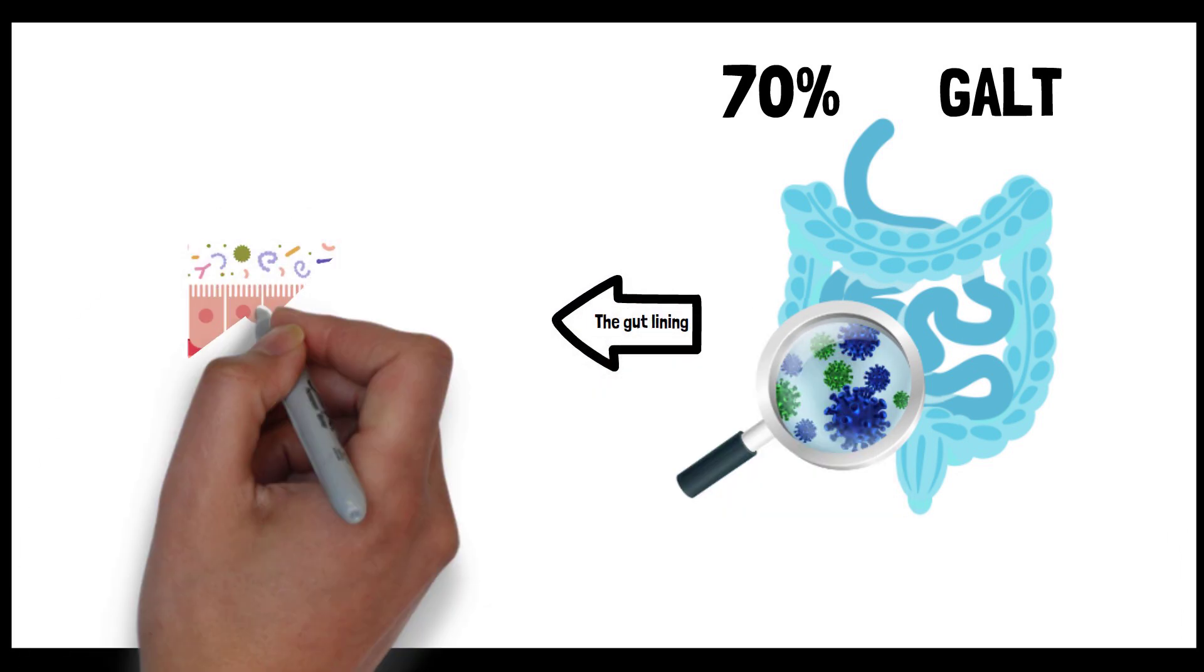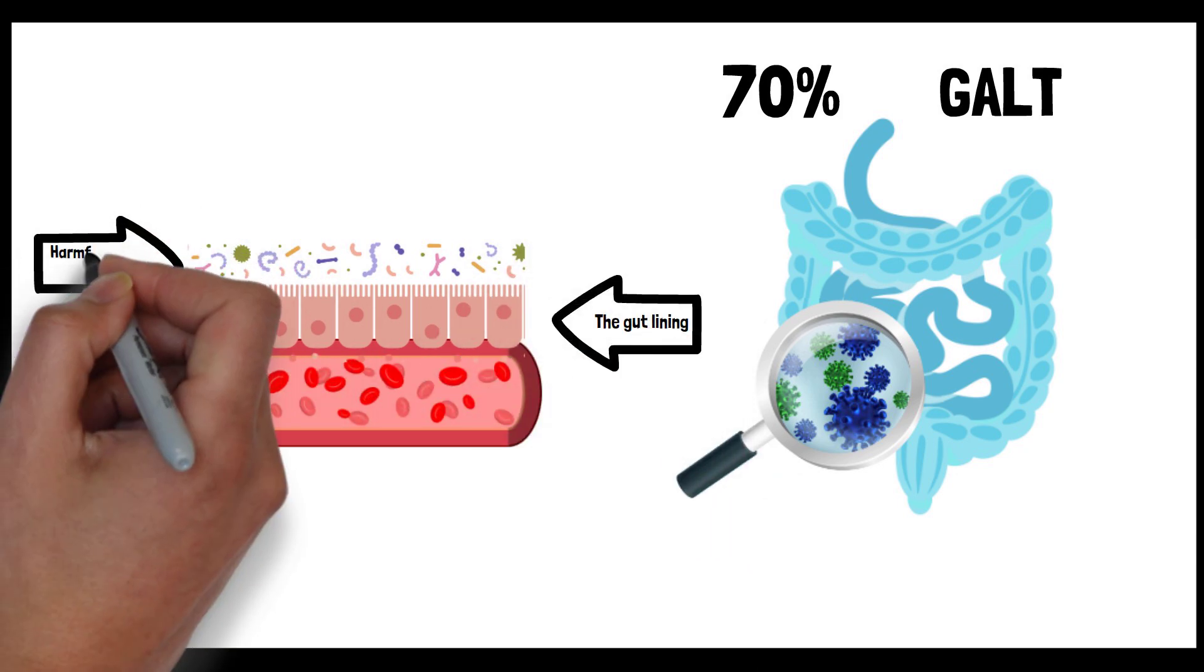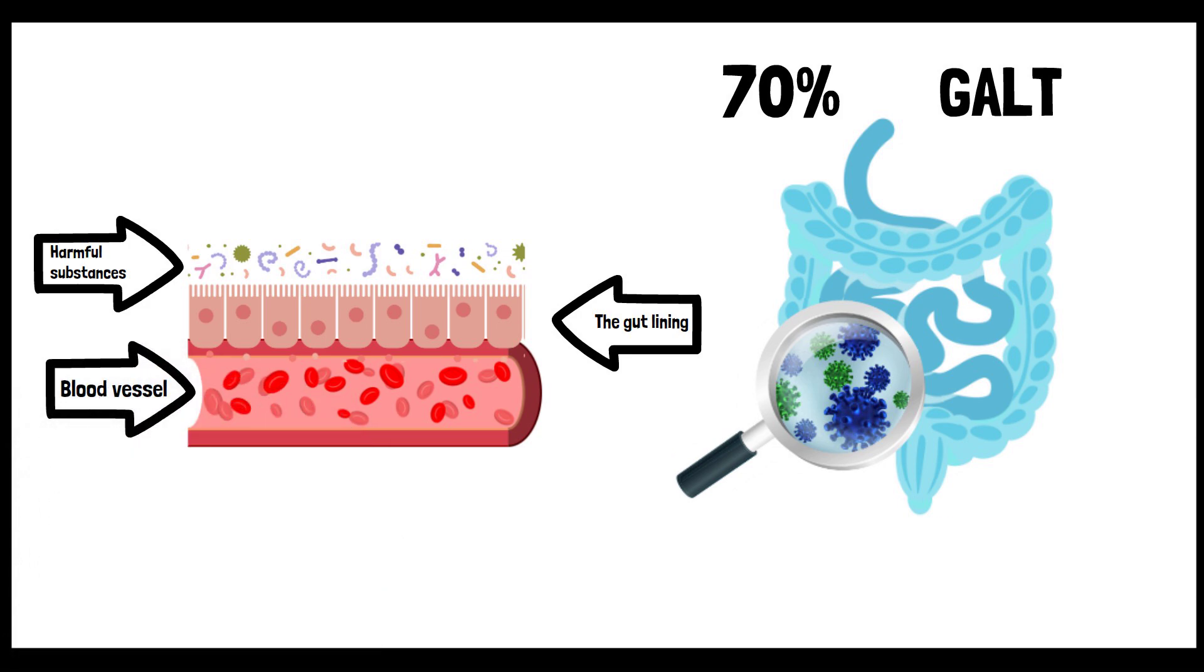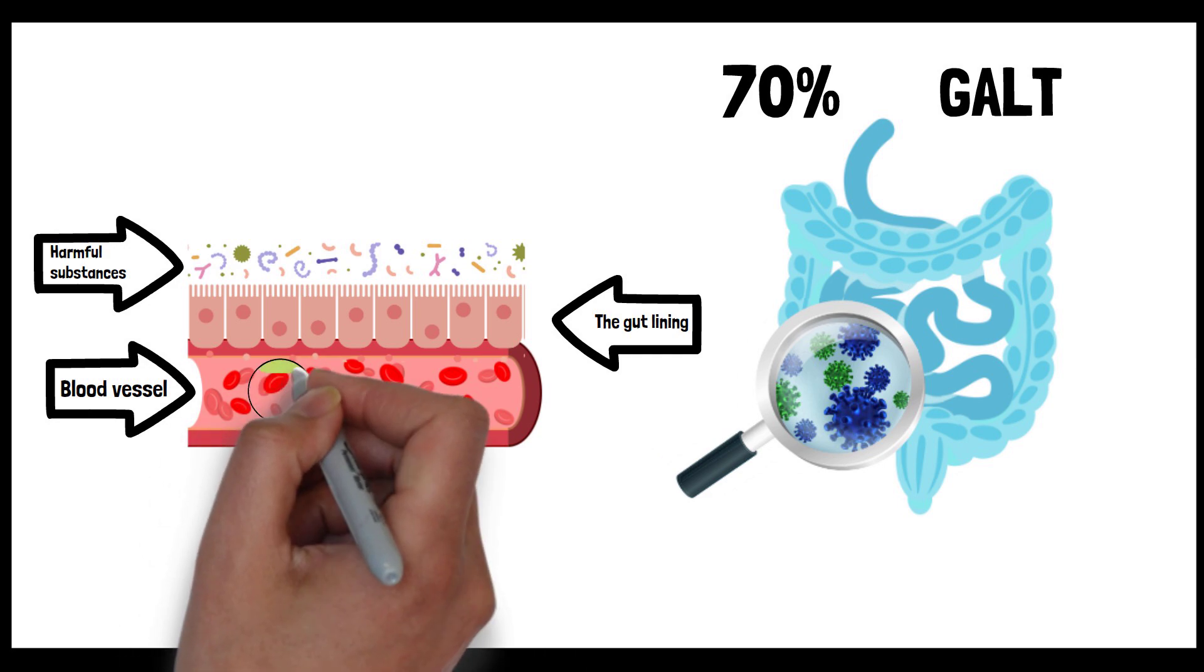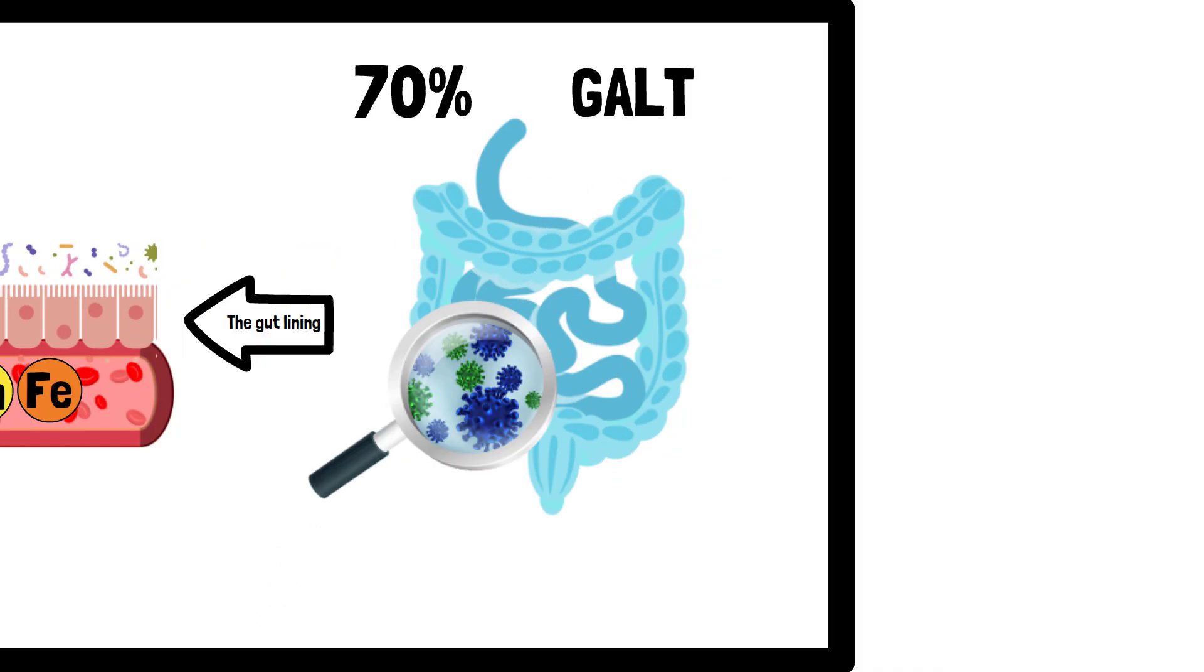The gut lining acts as a barrier to block harmful substances and maintain immune tolerance. This tolerance is essential to avoid overreactions to food or gut bacteria. A healthy gut also influences the body's inflammatory response and is vital for absorbing key nutrients like vitamin D, zinc, and iron, which support immune function.